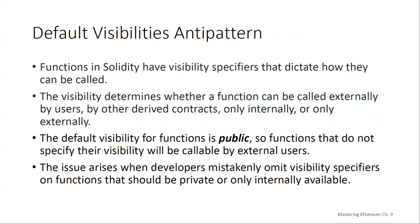Functions in Solidity have visibility specifiers to dictate how they're called — public, private, and so on. The visibility determines whether a function can be called externally by users, by contracts that extend from this contract, whether it can only be called internally or only externally. We talked about visibility specifiers previously, so I won't go into full detail, but the key point is: the default visibility for functions is public. A function that doesn't specify its visibility is going to be public and will be callable by external users.